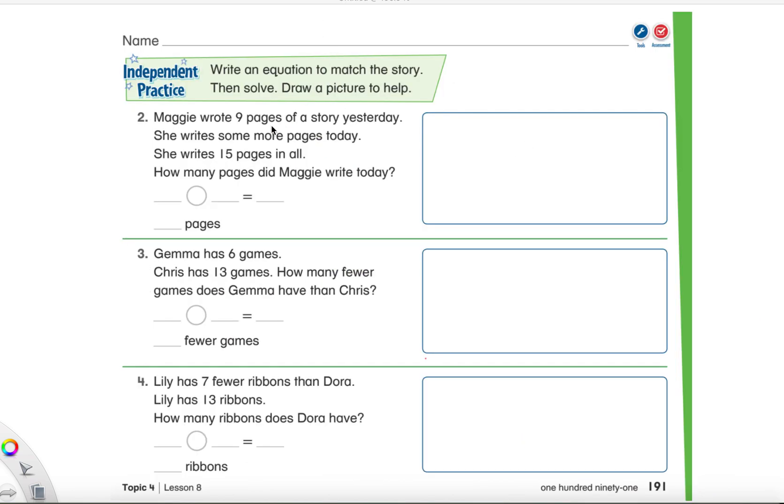I'm going to read problem number two to you. I will circle all the important things with you. But I'm going to want you to solve this on your own afterwards. So Maggie wrote nine pages of a story yesterday. That's pretty special that she wrote nine pages. She writes some more pages today. Do we know how many? No. We don't know how many pages she wrote today. She writes 15 pages in all.